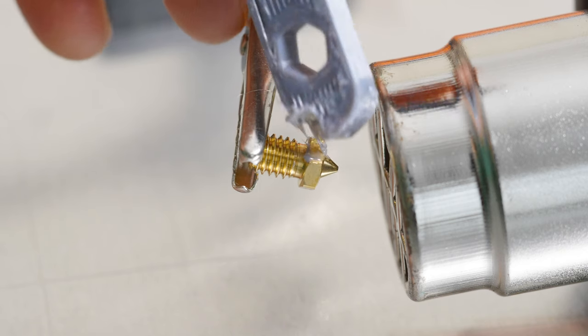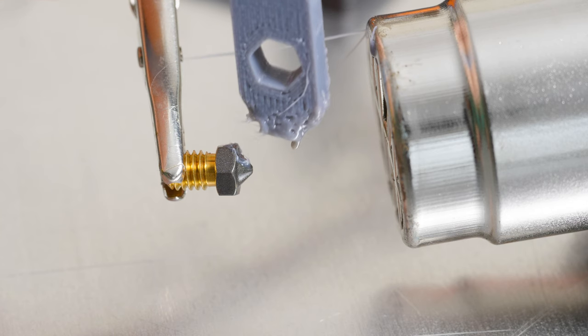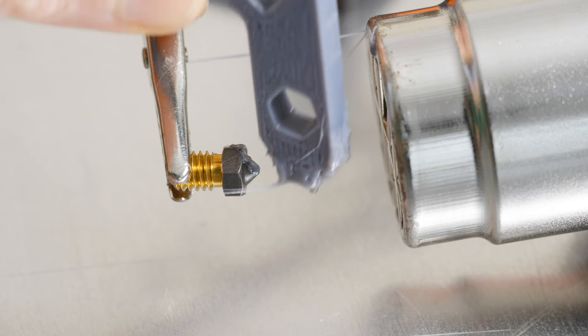I'm going to heat each nozzle and melt some PETG filament onto the nozzles. One thing I noticed right away was the PTFE coated nozzles didn't actually stop the melted plastic from sticking to the coating when it was hot.